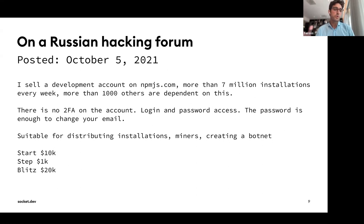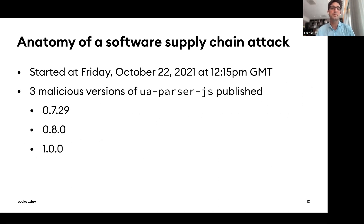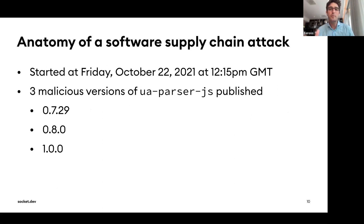We don't know for sure that this post led to ua-parser.js being compromised, but it happened basically two weeks before the package was taken over. On October 22nd, three malicious versions of ua-parser.js were published. It's probably the case that these two events are connected.